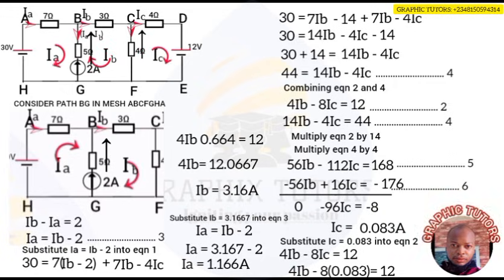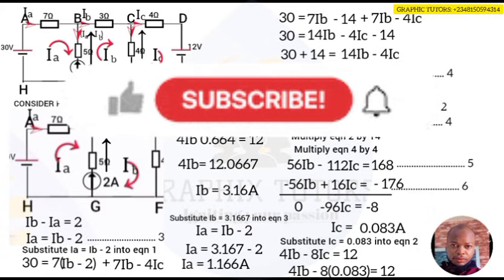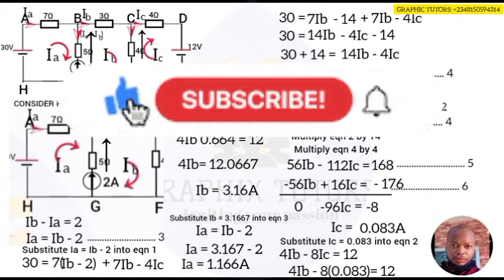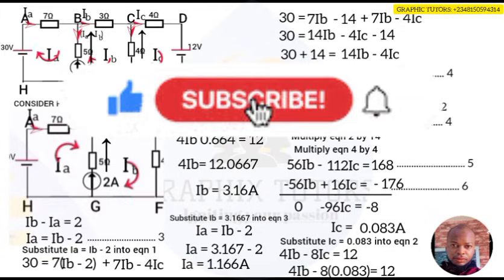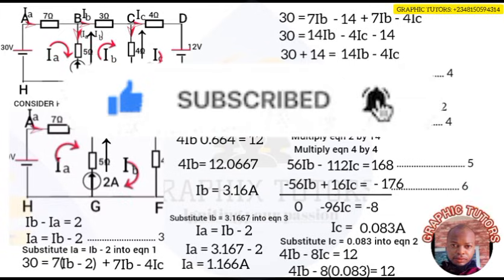We have successfully calculated all mesh currents: ia = 1.166 amperes, ib = 3.166 amperes, and ic = 0.083 amperes. If you found this video helpful, please don't forget to like, subscribe, and share. Thanks for watching.